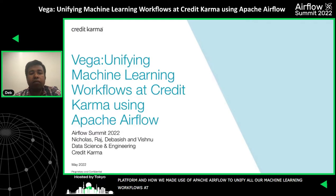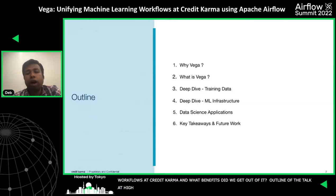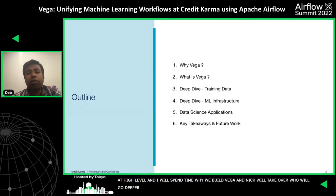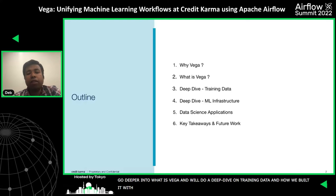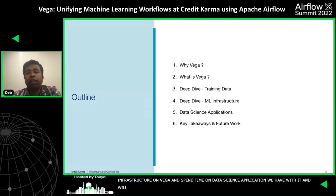What did we get the benefits out of it? The outline of the talk at a high level: I will spend some time on why we built Vivega. Then Nick will take over and go deeper into what Vega is and do a deep dive on training data — how did we build training data with Vivega. After that, Raj will take up the deep dive on setting up the machine learning infrastructure with Vivega. We'll spend some time on the data science applications we power with it, and then end with key takeaways and future work.